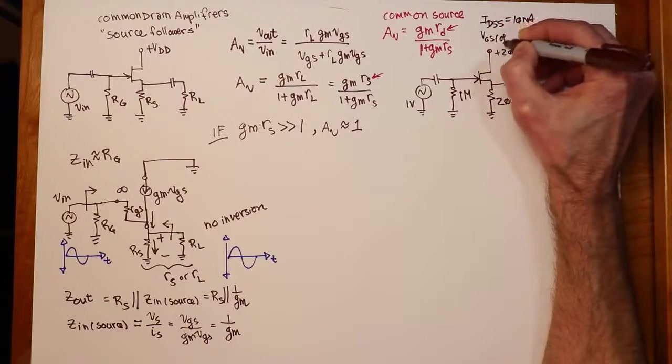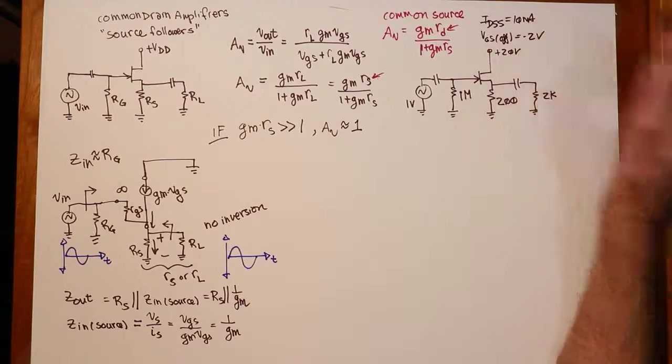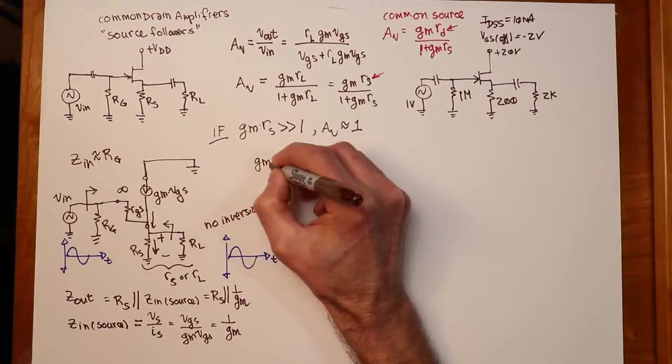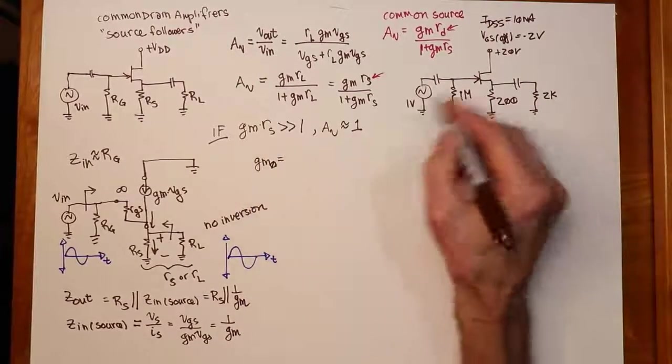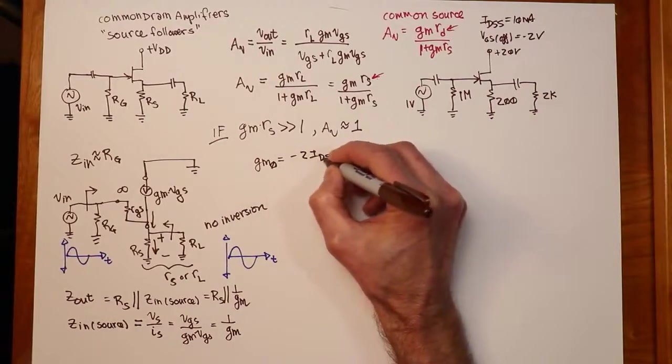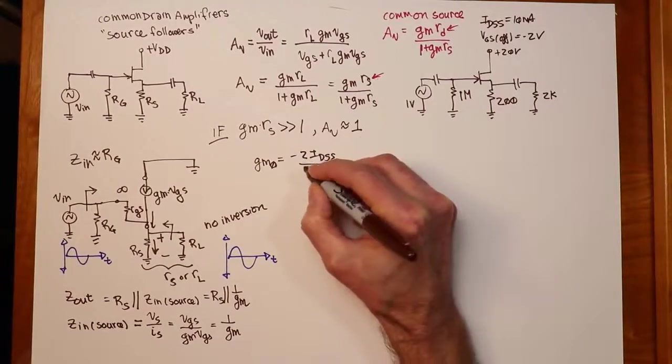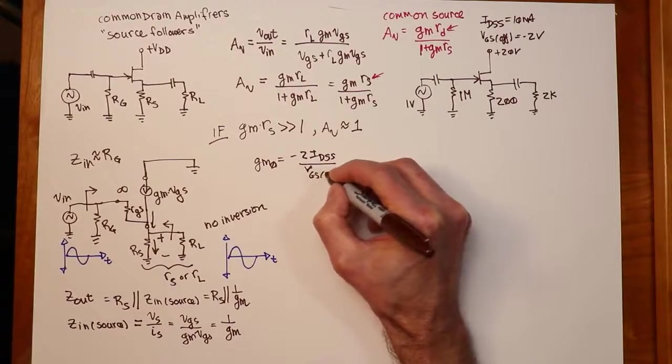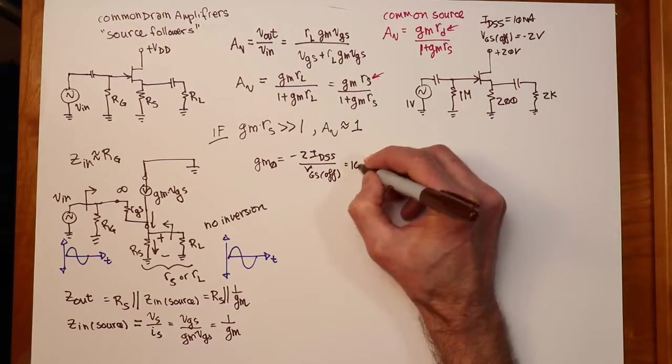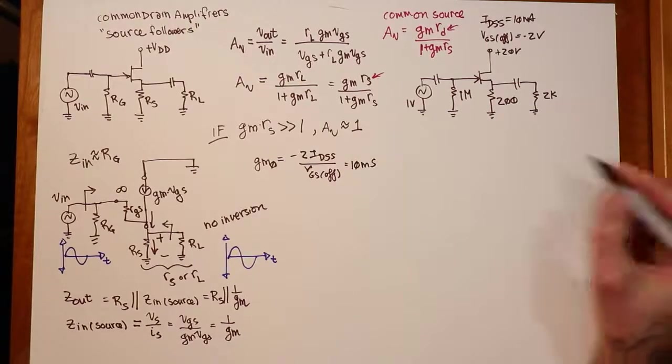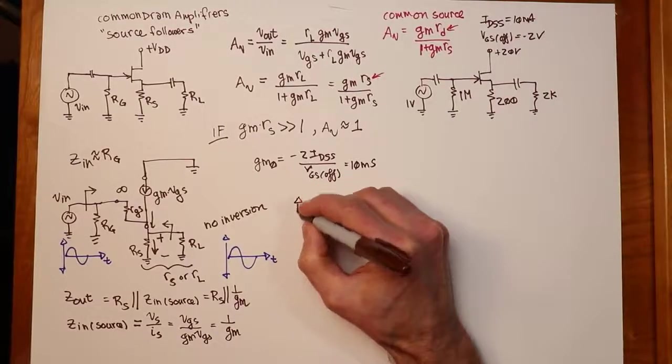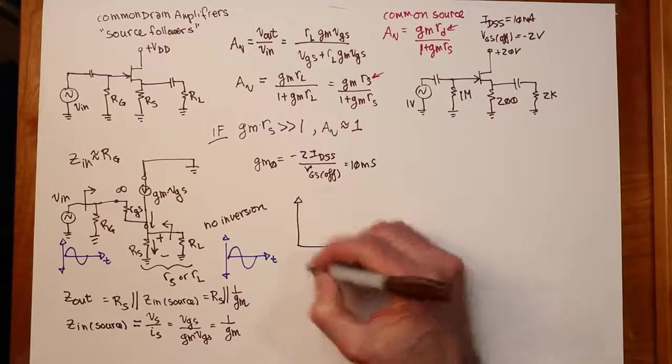We'll put in a 200 ohm for that and across it we'll put in, let's say a 2K. Power supply, it's not really critical. Let's just put in 20 volts over there and we can put in a volt for the source. The transistor itself, like I said, we'll reuse the one from last time. 10 milliamps for IDSS, VGS off was minus 2, and we can figure out the GM0 value. Remember GM0, this is again a device equation, it's not a bias equation. Negative 2 IDSS over VGS off.